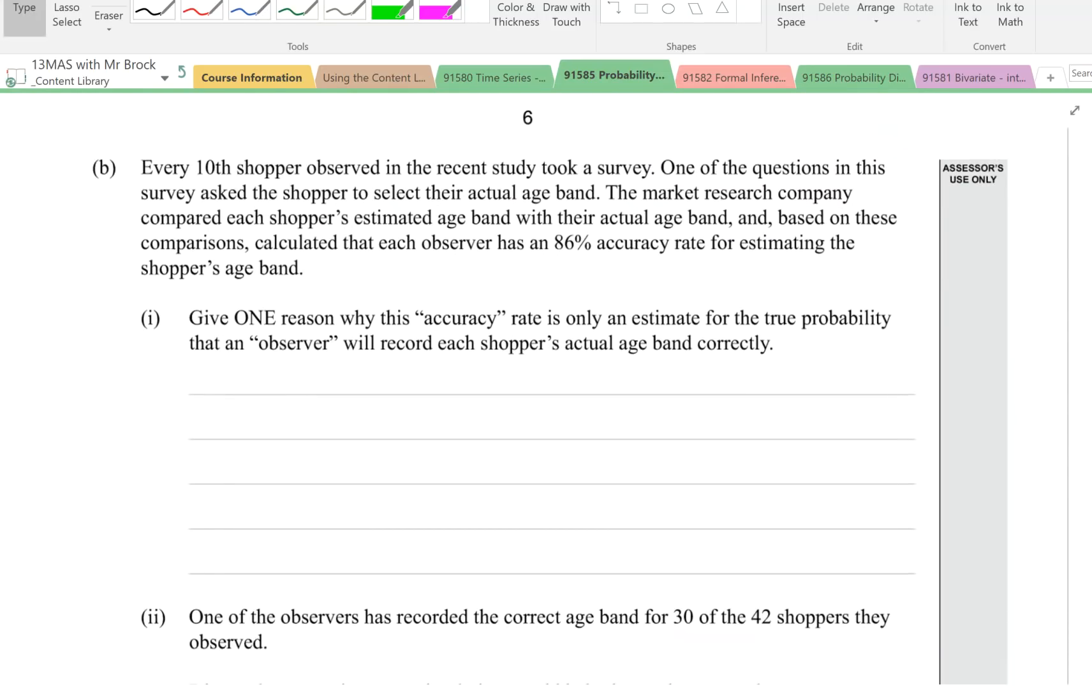Part B. Every 10th shopper observed in the recent study took a survey. One of the questions in the survey asked the shopper to select their actual age band. The market research company compared each shopper's estimated age band with the actual age band, and based on these comparisons calculated that each observer has an 86% accuracy rate for estimating the shopper's age band.